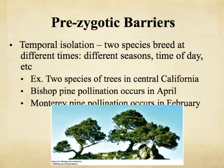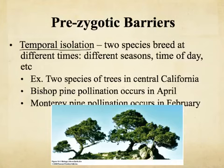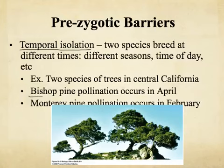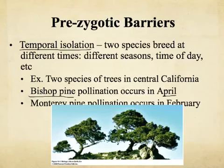A second prezygotic barrier is temporal isolation. If one population had a mutation making them breed at one time of year, and a different population had a mutation making them breed at a different time, they're never going to reproduce and have fertile offspring. An example: there are two species of trees in central California. The bishop pine produces pollen during April, but the Monterey pine produces pollen during February. Because natural selection made these two trees pollinate at different times, they never reproduce together — this is an example of temporal isolation leading to speciation.